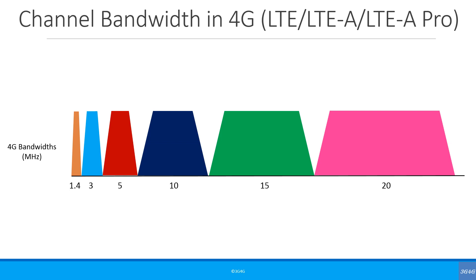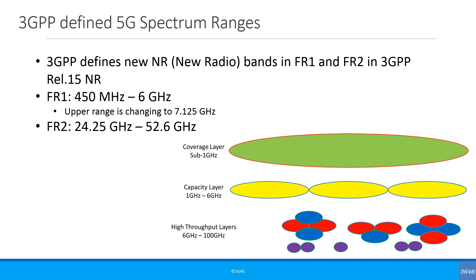All 4G devices support up to 20 MHz channel bandwidth. In 5G, as we have discussed, there are three types of spectrum needed: the coverage layer, which is sub-1 GHz; the capacity layer, which is between 1 and 6 GHz — the most popular spectrum band in that range is 3.4 to 3.6 GHz; and finally the high throughput layer, which is above 6 GHz and below 100 GHz.